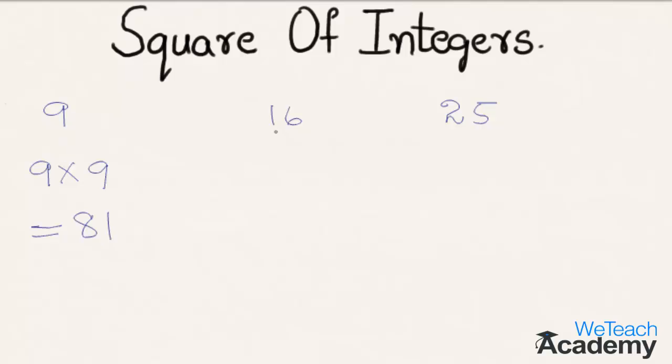Now let us consider another number, 16. Square of 16, that is 16 into 16, equals 256. So 256 is the square of the number 16, and square root of 256 is 16.